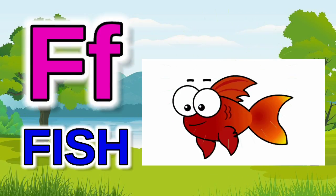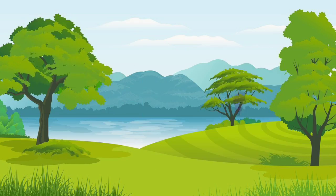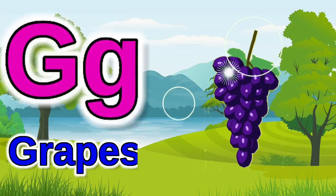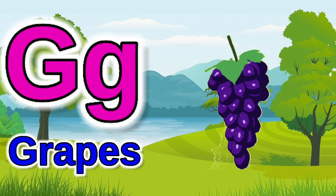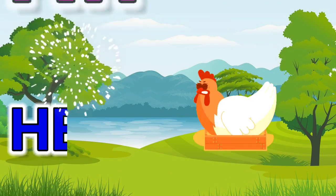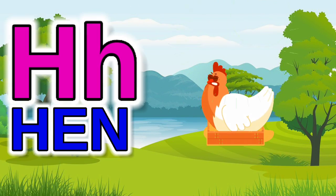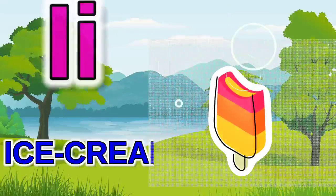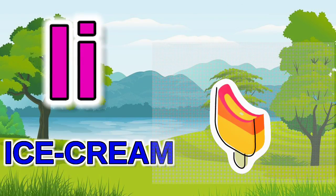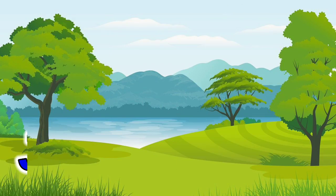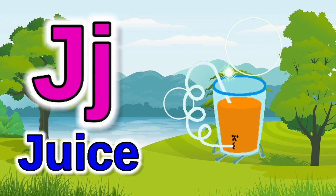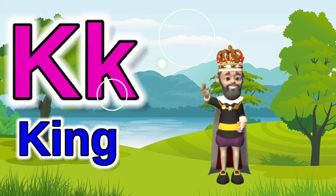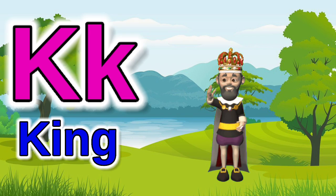F for fish, G for grapes, H for hen, I for ice cream, J for juice.